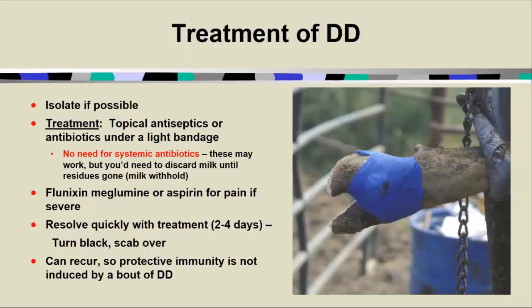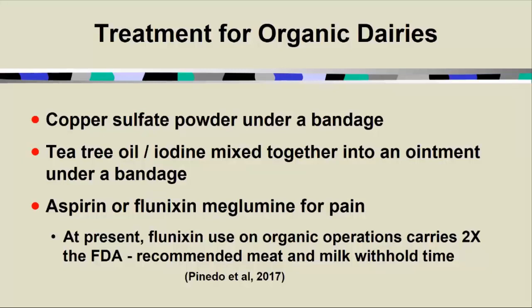You didn't do anything wrong — it's just the nature of the game. For organic dairies, topical antibiotics are not allowed. If systemic antibiotics have to be used, that cow has to be pulled from the organic string. Copper sulfate powder under a bandage has been used successfully for digital dermatitis. Different oils and iodine mixed together to form ointments work well. Aspirin, flunixin, and meglumine are allowed for particularly painful animals. As an organic operation, you will have to carry a 2X withhold for flunixin use as per organic regulations.